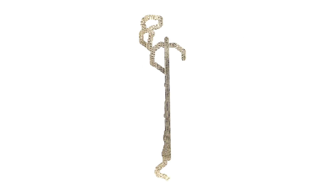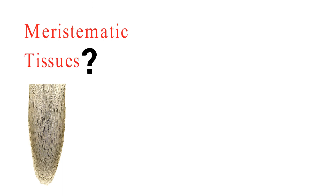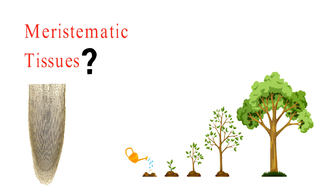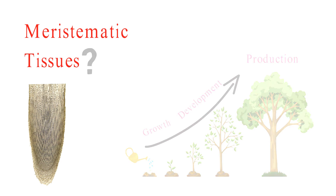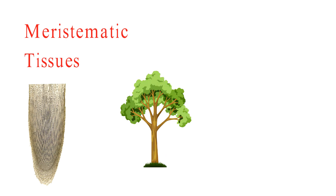Let's start at the very beginning. What on earth are meristematic tissues? Meristematic tissues are like the superheroes of the plant world. They are specialized plant cells responsible for growth, development, and the production of new cells. Here's a mind-blowing fact: meristematic tissues are the reason plants can grow throughout their lives.